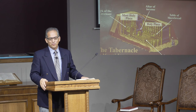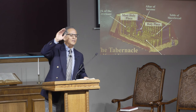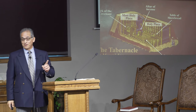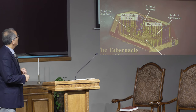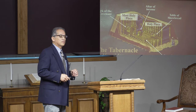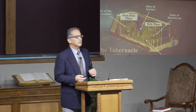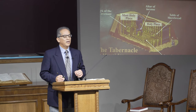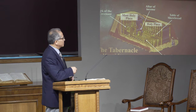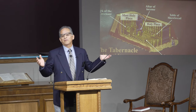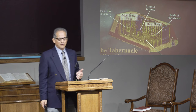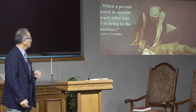Philo of Alexandria went overboard — he would say, for example, that the red materials symbolized air and the linens symbolized earth. These kinds of interpretations are not found in the Bible. We have to be careful not to go that route.